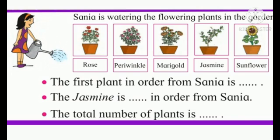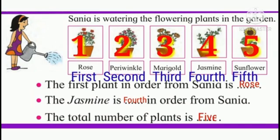Here children, Sanya is watering the flowering plants in the garden. The plants are Rose, Periwinkle, Marigold, Jasmine and Sunflower. Look at the picture above and write the proper words in the blank spaces. The first plant in order from Sanya is Rose. The Jasmine is 4th in order from Sanya. The total number of plants is 5.